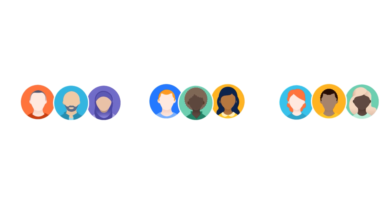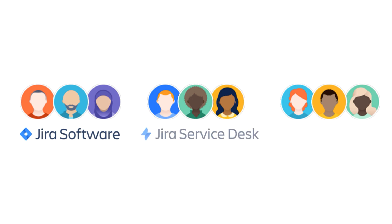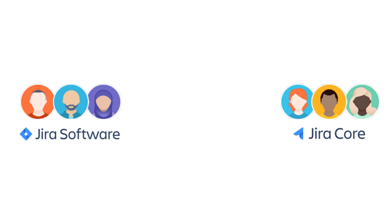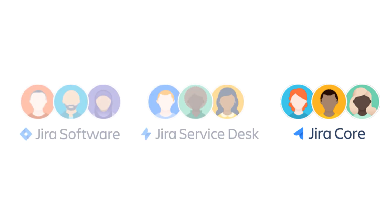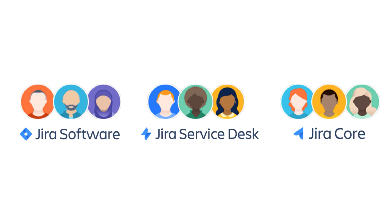Jira is built for teams to manage their projects and track their work. It's offered in three different products: Jira Software, Jira Service Desk, and Jira Core. You may have two of these products at your site, just one, or all of them, depending on the type of teams you have and what you're looking to accomplish.